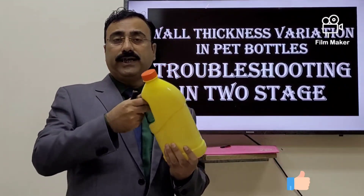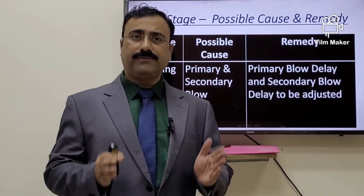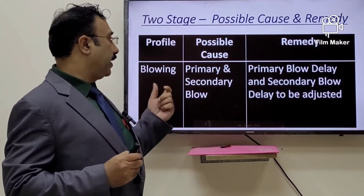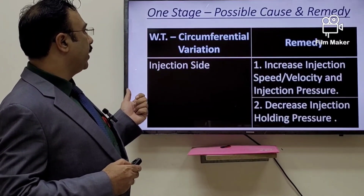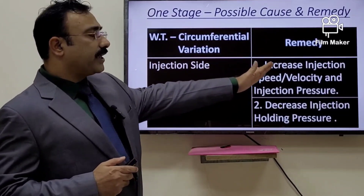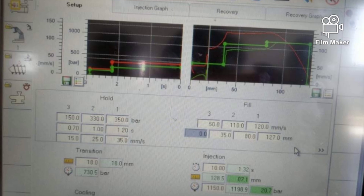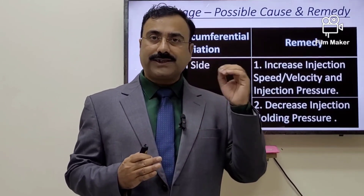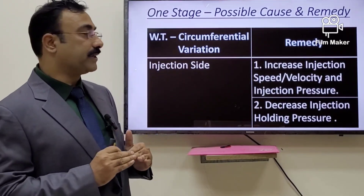If you are standing in front of a single-stage machine, you have to correct wall thickness variation from the barrel side — the injection side. On the injection side, the first thing to correct is the injection speed (sometimes written as velocity) and injection pressure. You have to increase these, but keep in mind there should be no flash in the preform. If flash appears, you must reduce injection speed and injection pressure.